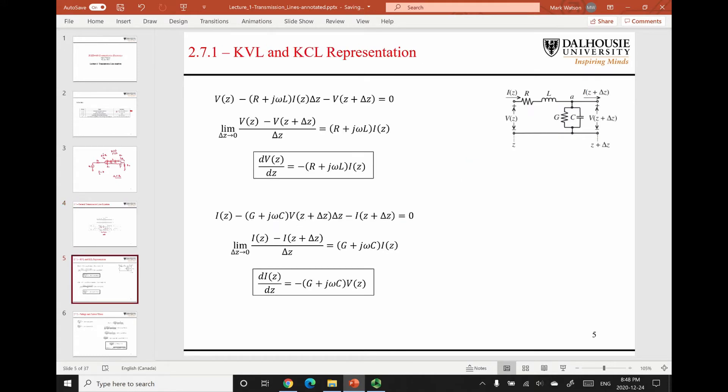So with this model of the transmission line, again, we're going to assume an infinitesimally small width delta z here. Due to the spatial variation of the voltage and current waves, Kirchhoff's voltage and current laws can't really be applied. But if we assume that the length is infinitesimally small, we can approximate using Kirchhoff's voltage and current laws.